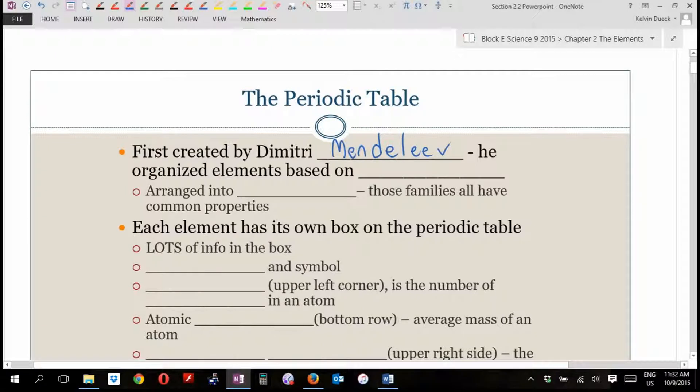But he could actually tell other scientists, I'm telling you, there's an element between element number 62 and element number 64, go find it. And not only could he say that, he could actually say, I think it's going to weigh about this much, I think it's going to probably be this color. It was like arranging something in alphabetical order but knowing that letters were missing. It allowed us to find missing letters of the alphabet of the universe.